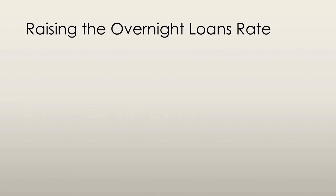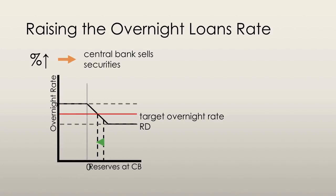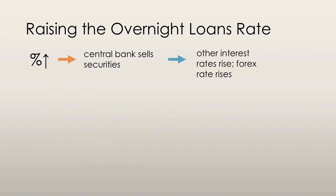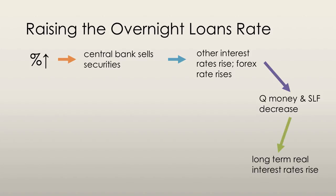When the central bank decides to raise the overnight loans rate, the opposite process takes place. The central bank begins by setting a new, higher target overnight loans rate and sells securities in an open market operation. This causes other interest rates to rise and the foreign exchange rate rises as well. The quantity of money and supply of loanable funds eventually decrease.